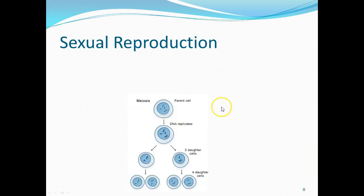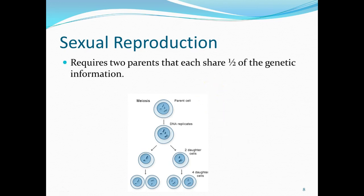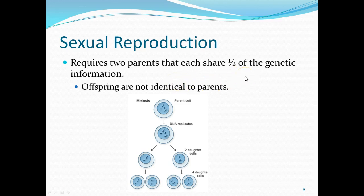Sometimes organisms need to undergo sexual reproduction. The difference here is that now there are two parents, and each parent contributes half of the genetic information — half the chromosomes come from mom, half from dad. Two different cells come together and merge as one, taking half the genetic material from each. Because it's a mix of half mom and half dad, the offspring are no longer going to be identical to the parents.